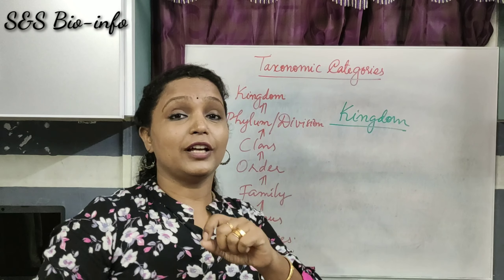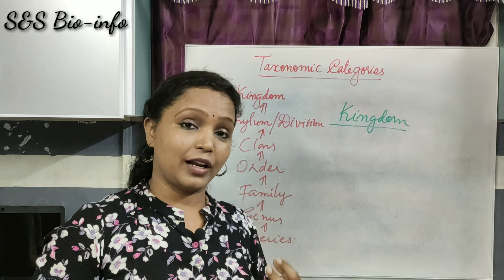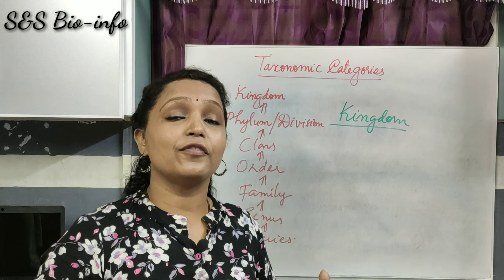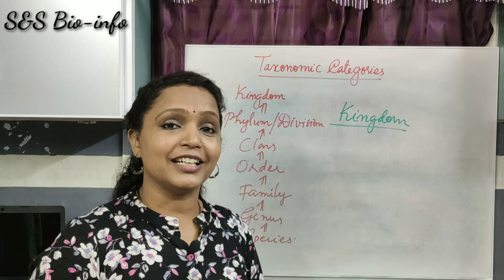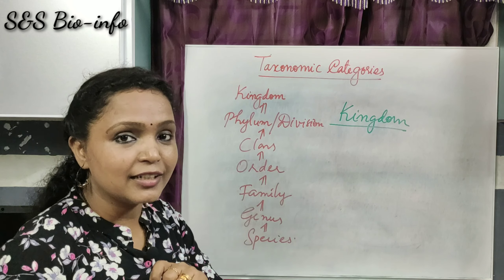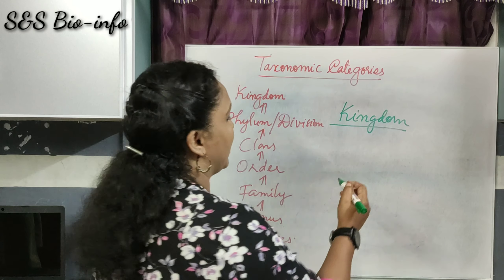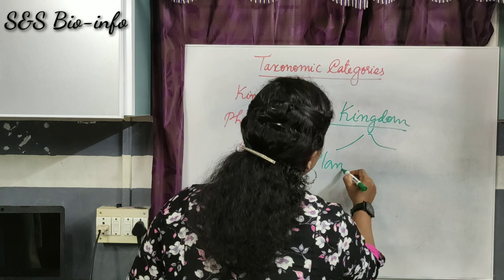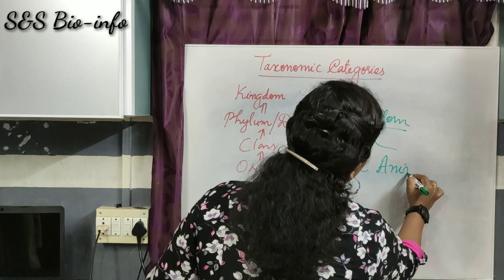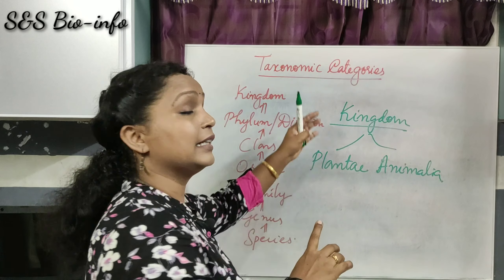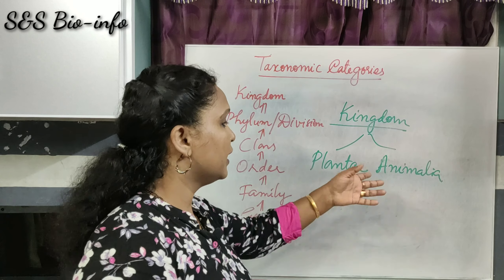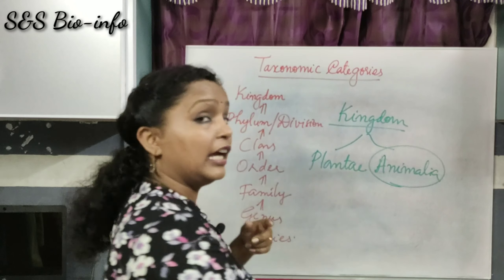Finally, the largest category is Kingdom. Kingdom comprises wide varieties of living organisms — different varieties of plants and animals — meaning the most number of differences can be observed in groups at the kingdom level. There are mainly two major kingdoms: Kingdom Plantae and Kingdom Animalia.